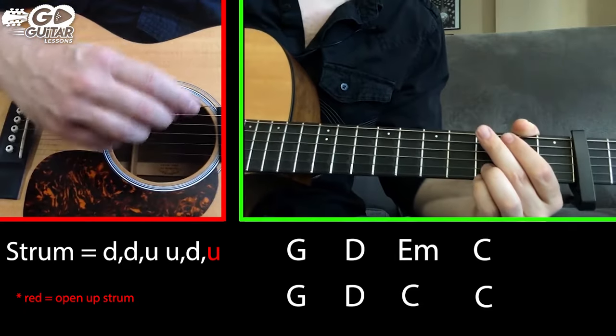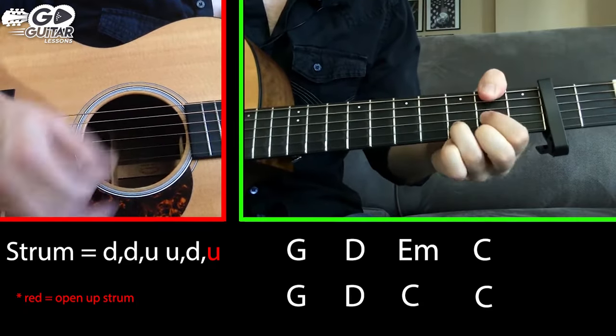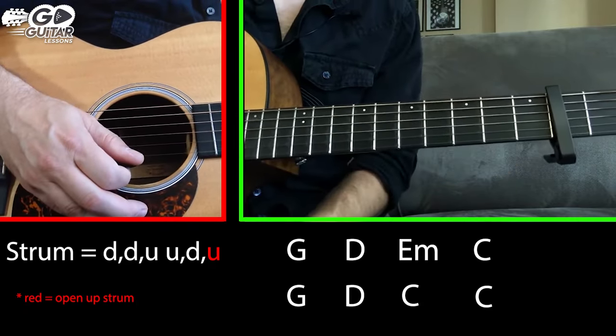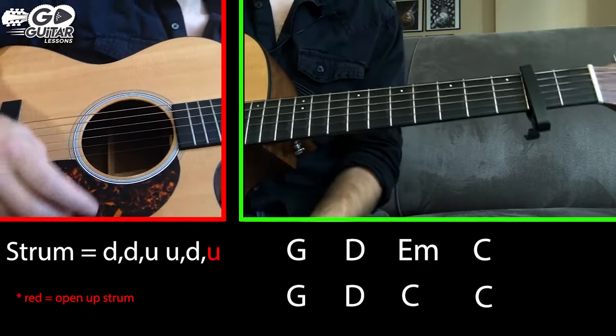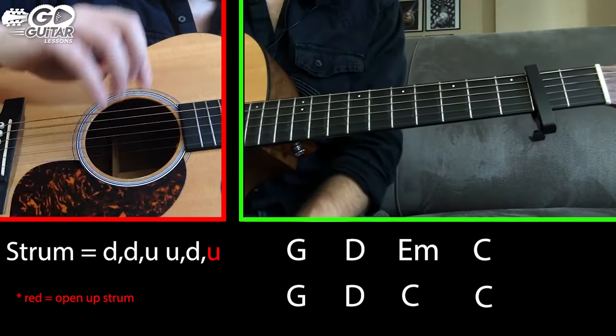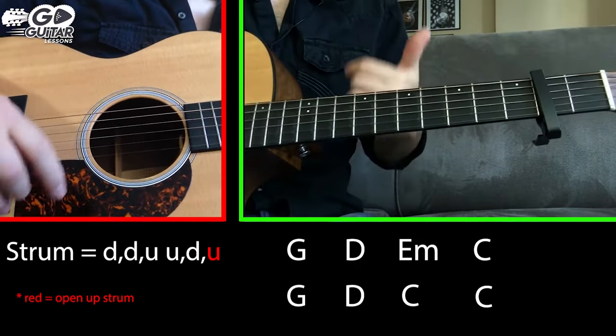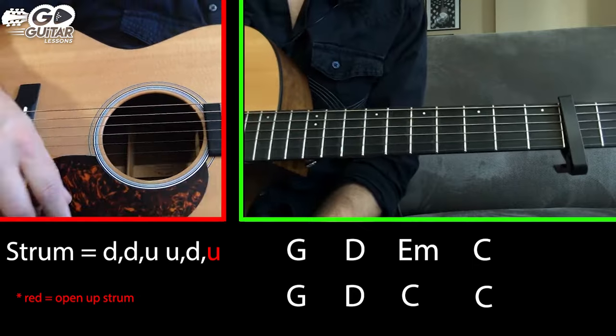So progression one has a G, D, E minor, C. Progression two has a G, D, C, C. And that's it. That's the whole song. There's one part where the dynamics drop down a lot. And of course, there's other lead guitar parts. So let me show you another layer of detail that I think will help with the song.